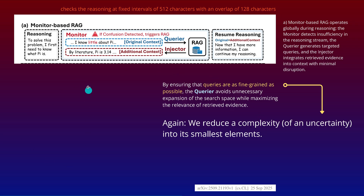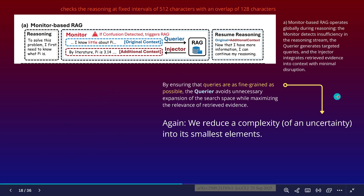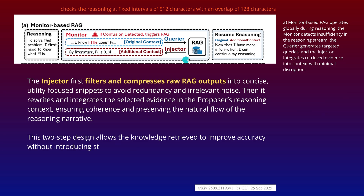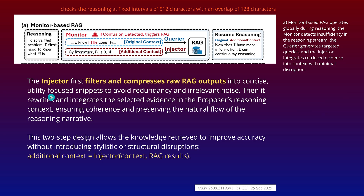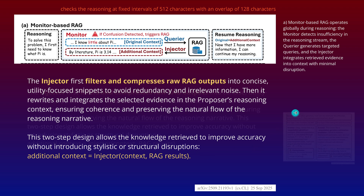This brings us to the second part — the injector. The injector coming back with RAG results filters and compresses the raw RAG outputs into a concise utility-focused snippet. We have here another agent. If you want, we have provided additional context: the injector has the original context and the RAG results — and you are familiar with this structure.